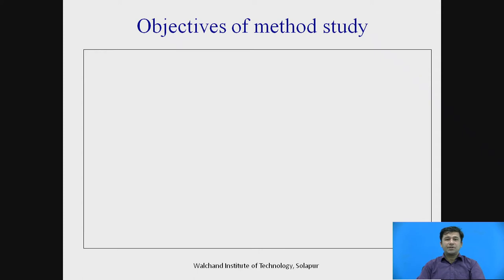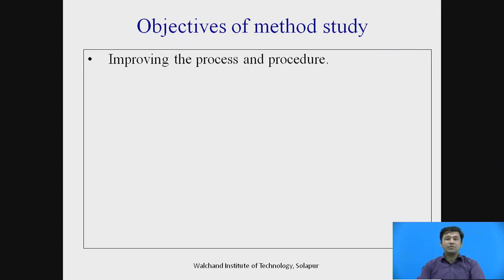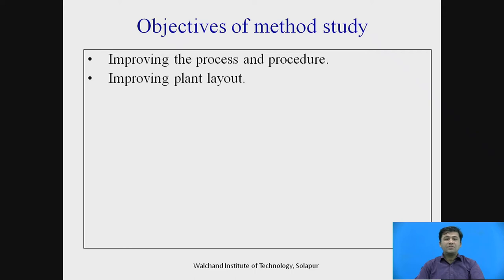What are the objectives of method study? The first and foremost objective is improving the process and procedure. Method study aims to reduce fatigue for the operator by improving the way things are done. The second important objective is to improve the plant layout. Due to improper plant layout, the efficiency of the whole system is reduced, leading to less productivity, more man movement, more material movement, and unnecessary movement that costs money.